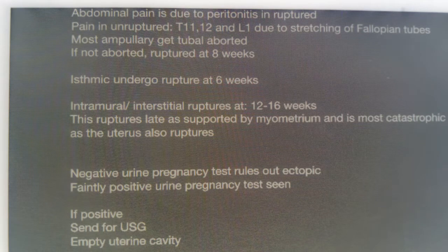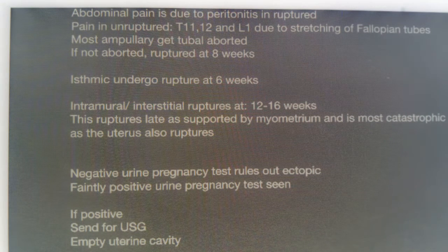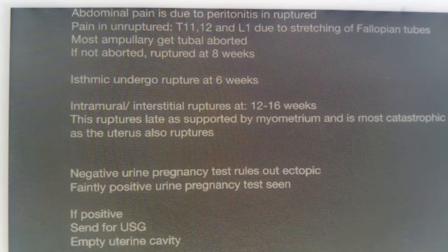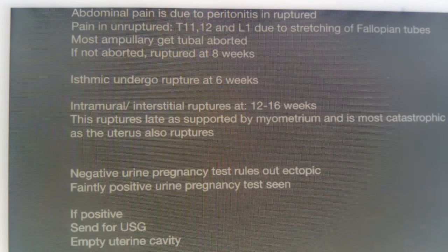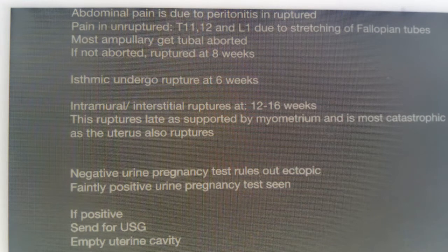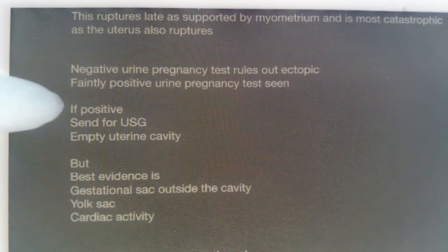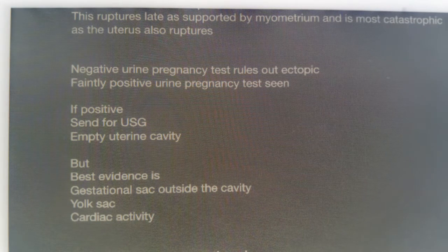The most common ectopic is ampullary, and ampullary ectopic most commonly gets aborted rather than ruptures. If it does rupture, it ruptures at around or after 8 weeks. Isthmic ectopic ruptures at around 6 weeks. Intramural or interstitial ectopic ruptures at 12 to 16 weeks — it ruptures late as it is supported by the myometrium, but it is the most catastrophic as the uterus also ruptures.